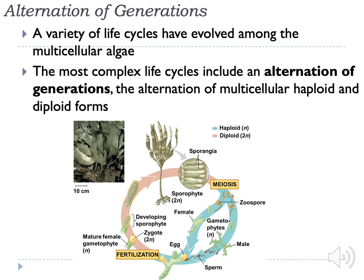Just like land plants, algae go through the alternation of generations, where they have both a sporophyte generation and a gametophyte generation. The gametophytes produce male and female structures, thus producing sperm and eggs through meiosis, and the junction of sperm and egg results in the formation of a sporophyte. The sporophyte produces sporangia, which produce haploid spores that give rise to new gametophytes.